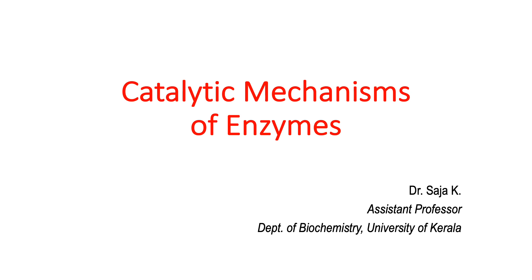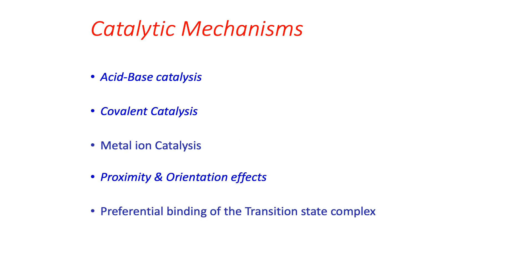The catalytic mechanisms employed by enzymes are identical to those used by chemical catalysts — they act by decreasing the activation energy barrier. But there are two things which make enzymes powerful catalysts: the specificity nature of the enzyme, and the optimal arrangement of catalytic groups in the active site. Enzymes catalyze reactions by binding with a substrate and interacting with the transition state.